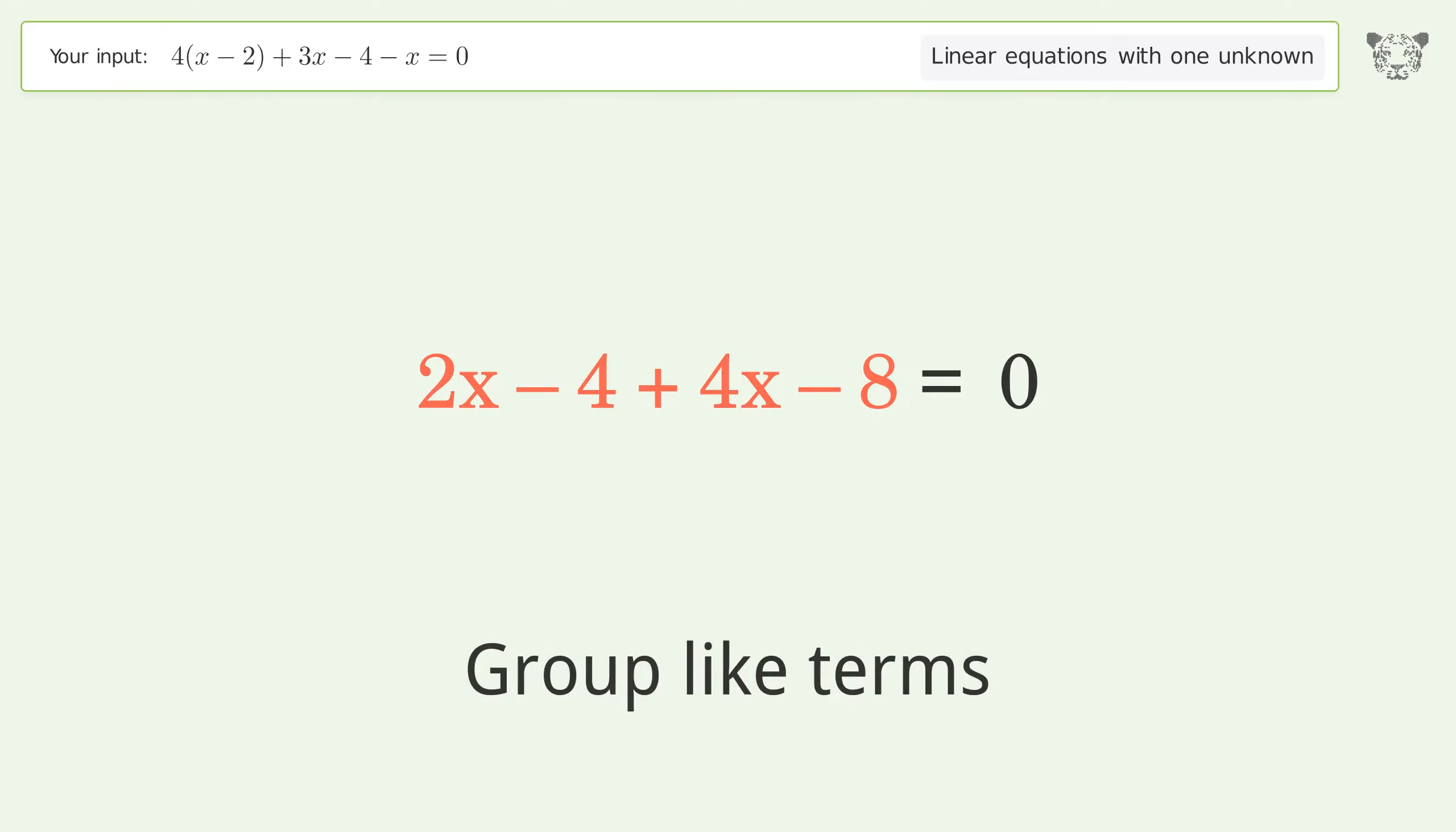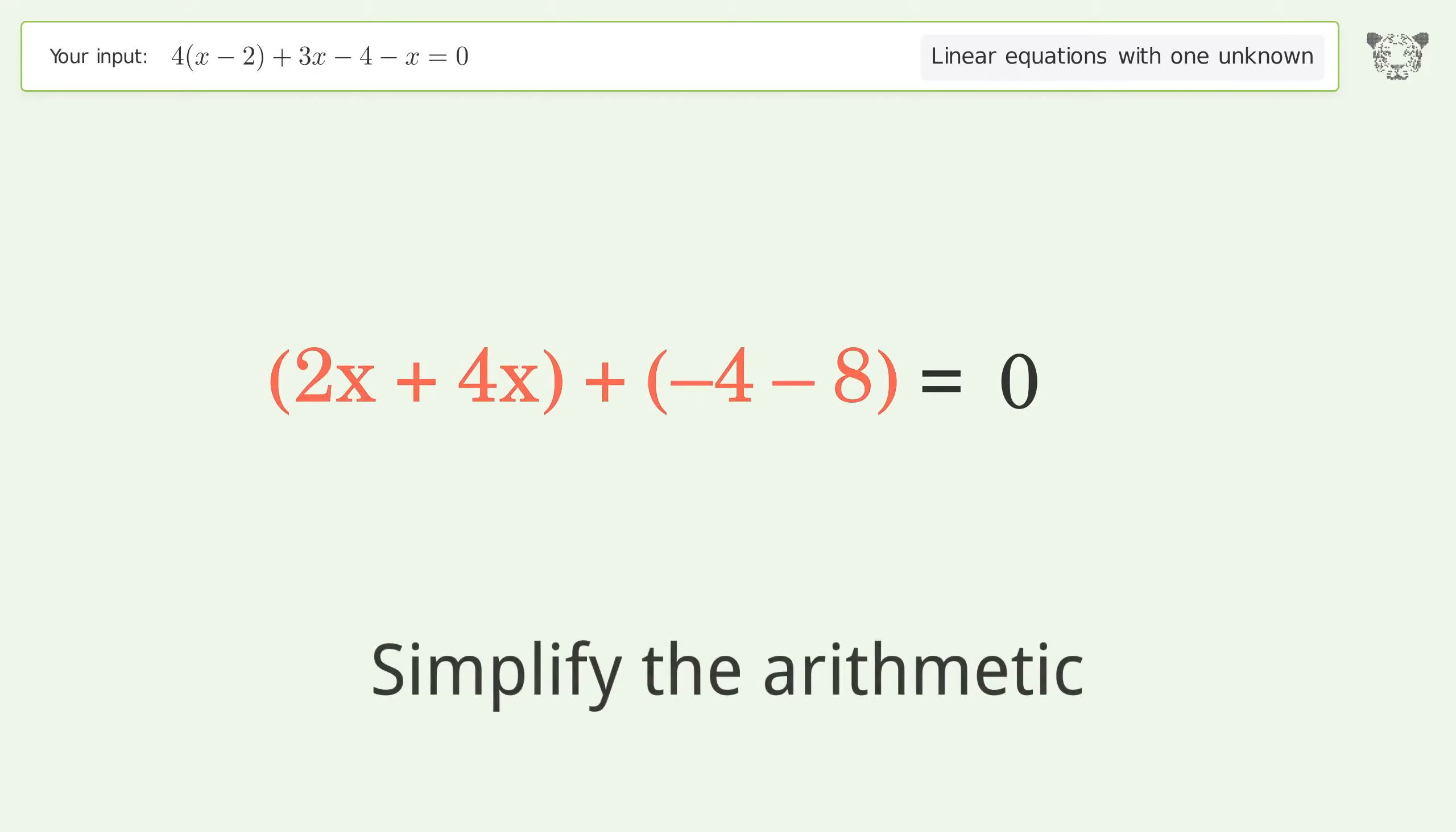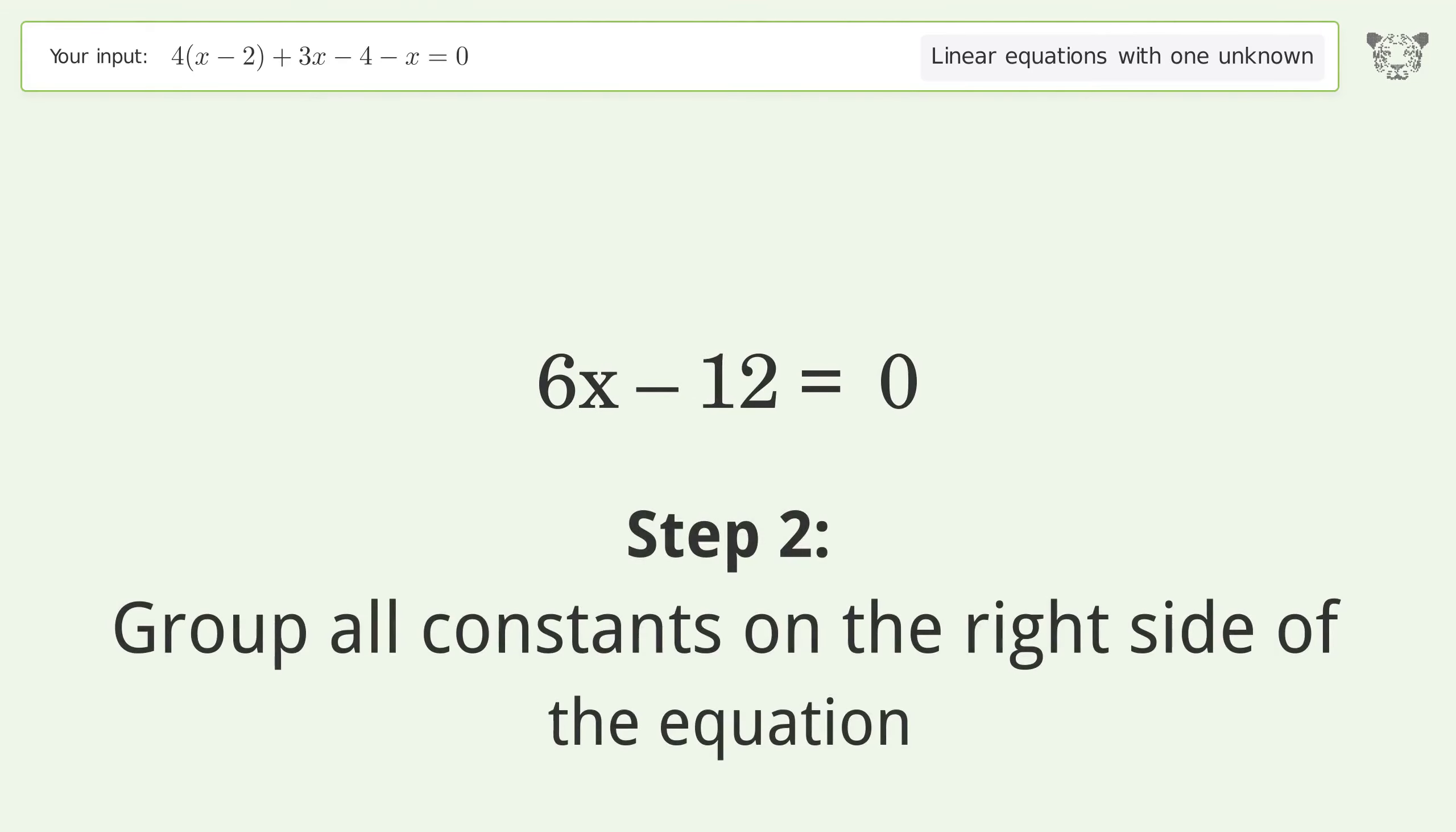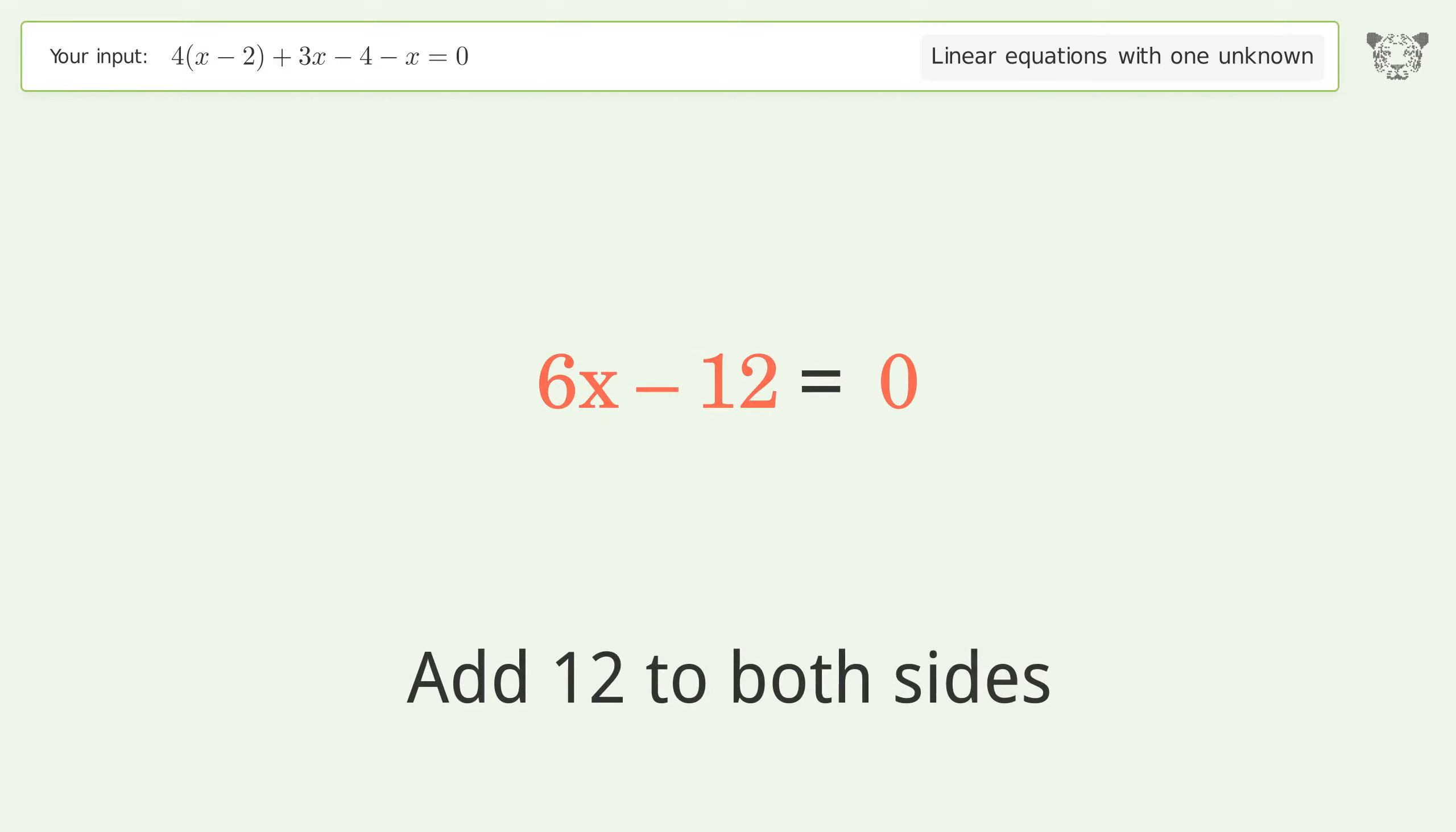Group like terms, simplify the arithmetic. Group all constants on the right side of the equation. Add 12 to both sides.